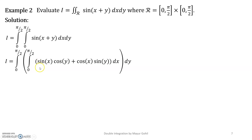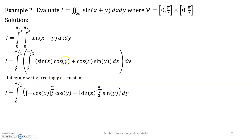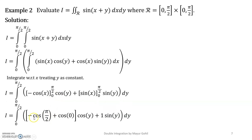Now integrate with respect to x treating y as constant. The integration of sin x gives −cos x, and the integration of cos x gives sin x. The limits are 0 to π/2. For the sin x term, note that sin(π/2) = 1 and sin 0 = 0. For the cos term, cos(π/2) = 0 and cos 0 = 1.